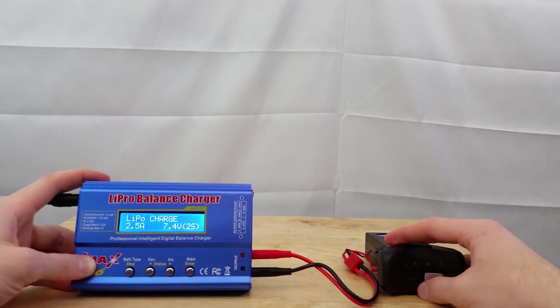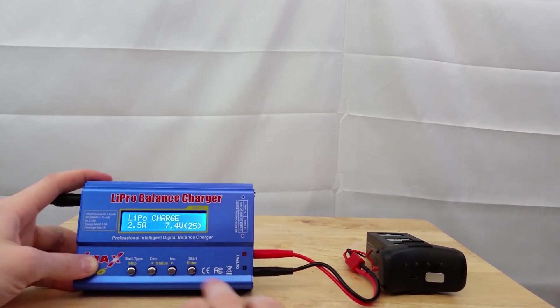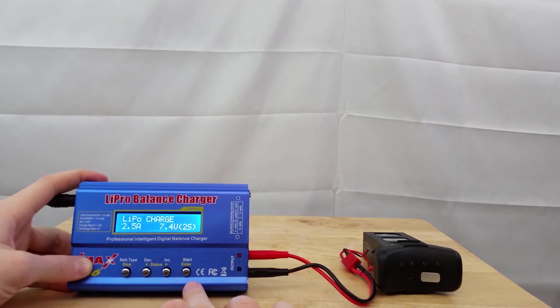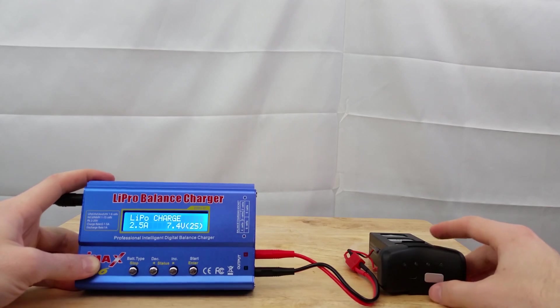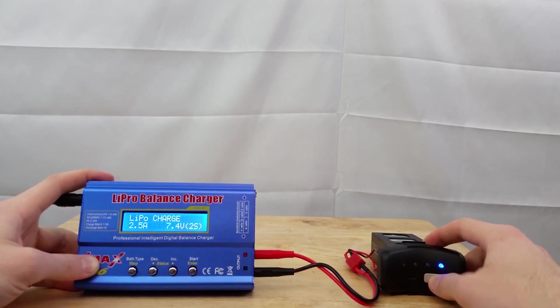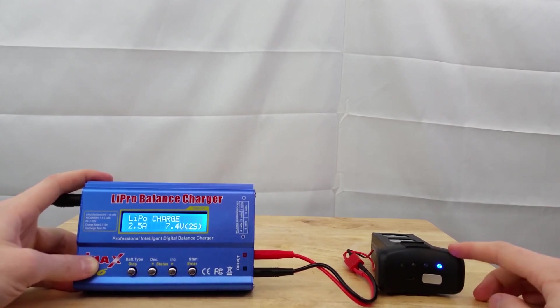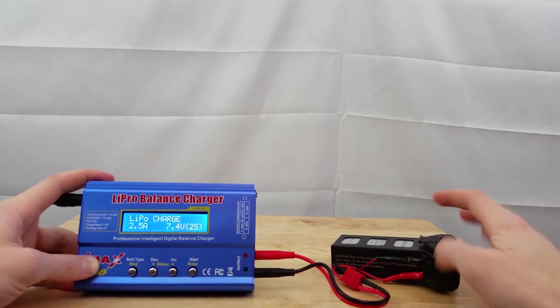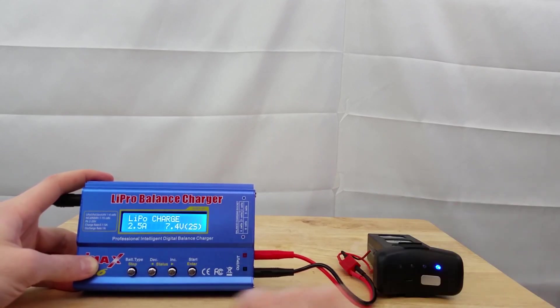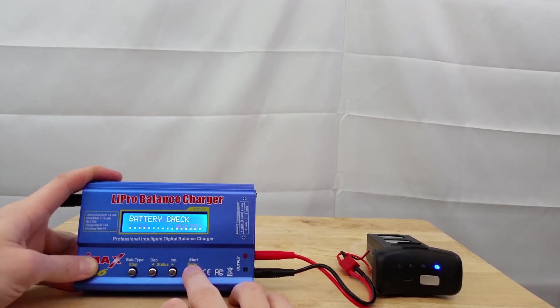Once you have all that on there, you'll hold the right key down to start the charge. But before that, what you have to do with this particular battery, you actually have to push the button to turn it on. Otherwise, these connections won't make connection because the switch is turned off. So after you do that, you hold the button on the right.